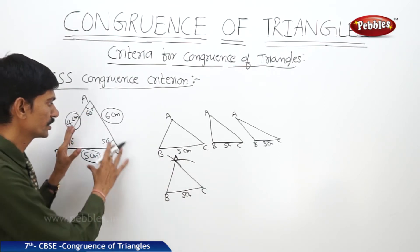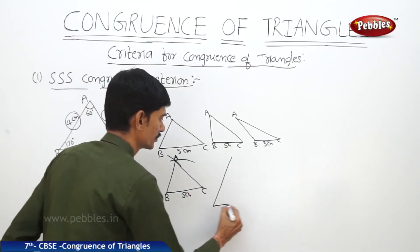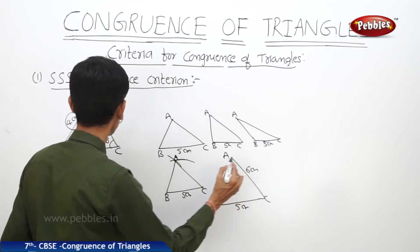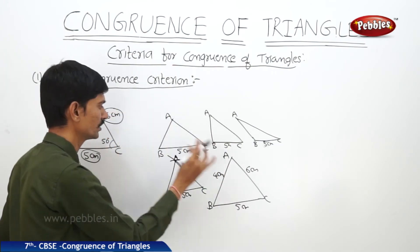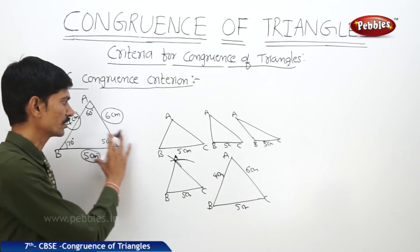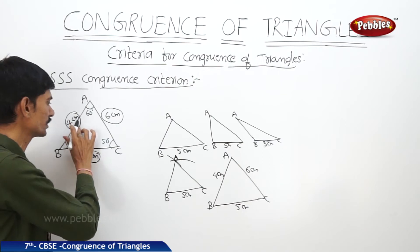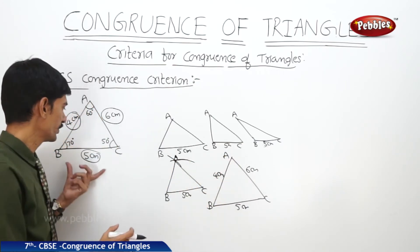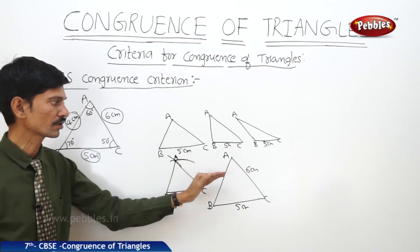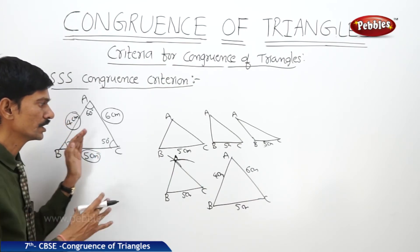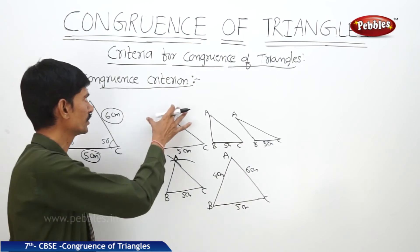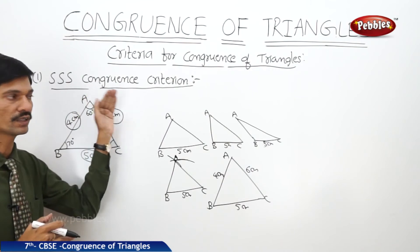We can observe that these two triangles are congruent to each other. The corresponding sides are equal: AB is 4 centimeters in both, BC is 5 centimeters in both, and AC is 6 centimeters in both. When three sides of the first triangle are equal to the corresponding three sides of the second triangle, the two triangles are congruent. This is the SSS — Side Side Side — Congruence Criterion.